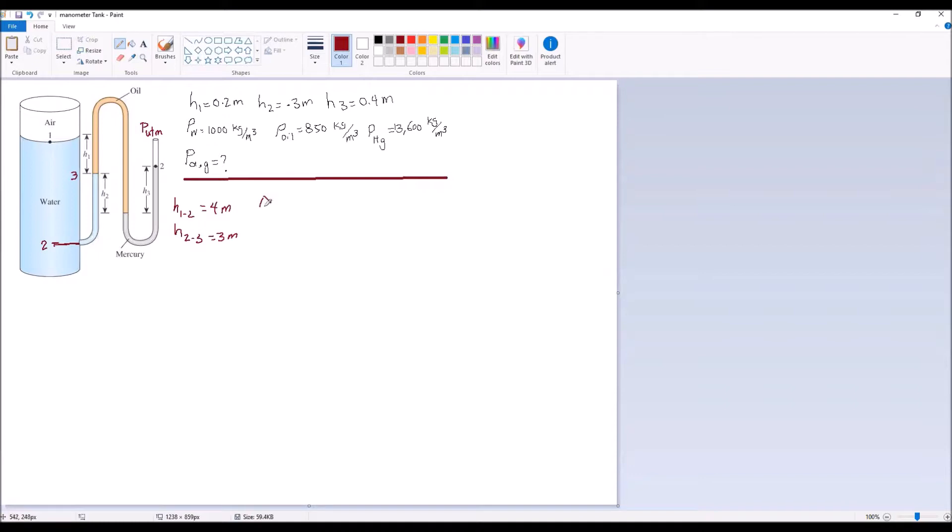So let's use the equation for changing hydrostatic pressure, which is rho GH. Delta P is rho GH, and the fluid here is water.